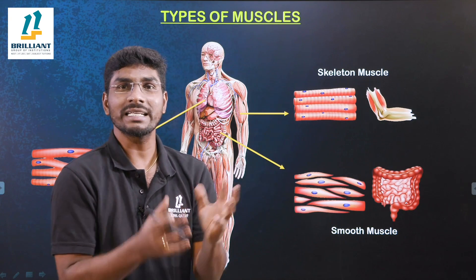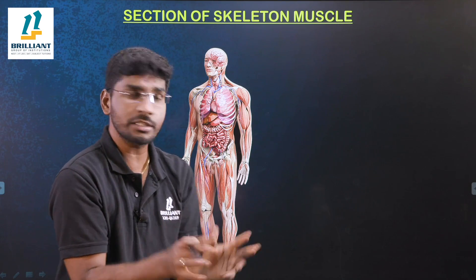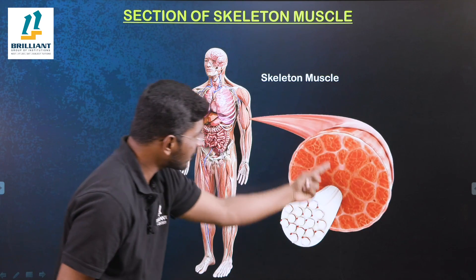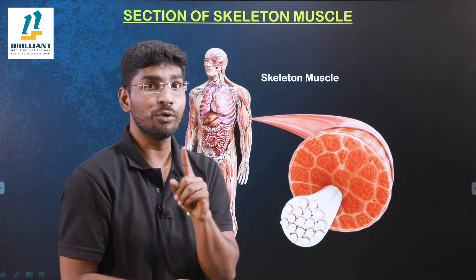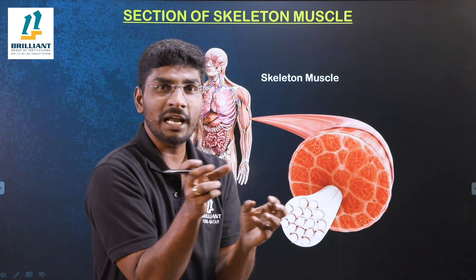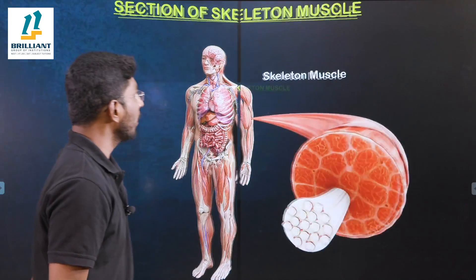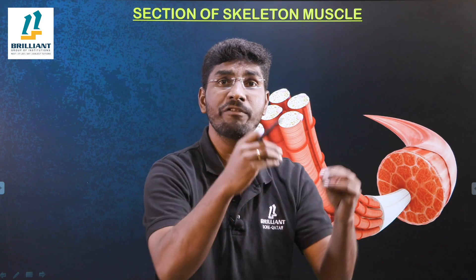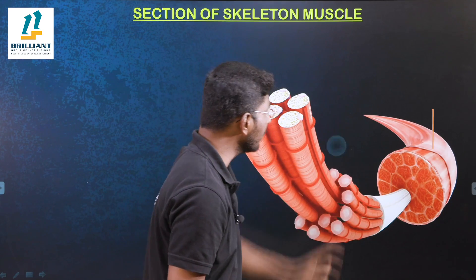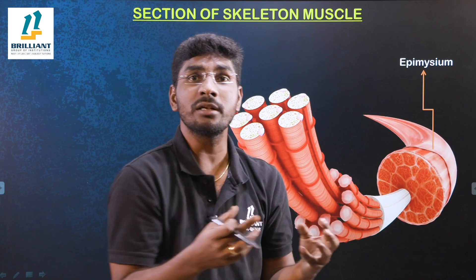Now we are going to understand the cross-section of a muscle — what is exactly inside. Taking the tricep muscle as an example, this is a skeletal muscle directly attached to bone. Muscles attach to bone with the help of a connective tissue called tendons. Around the skeletal muscle there is a connective tissue membrane, and the outermost connective tissue membrane surrounding the muscle is known as epimysium.